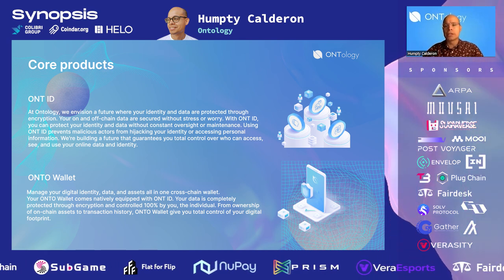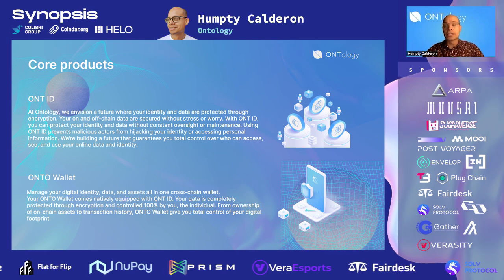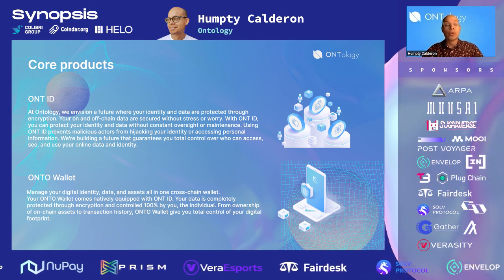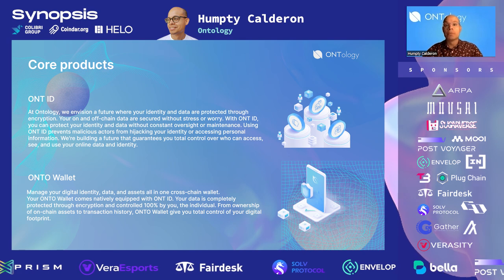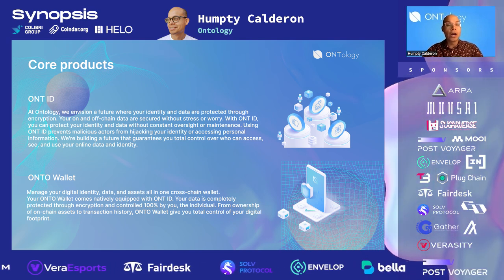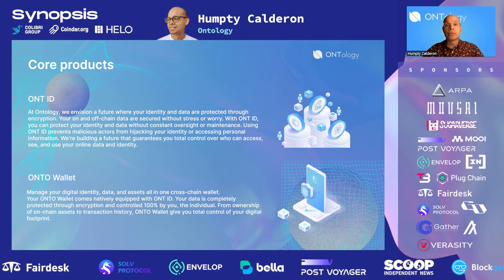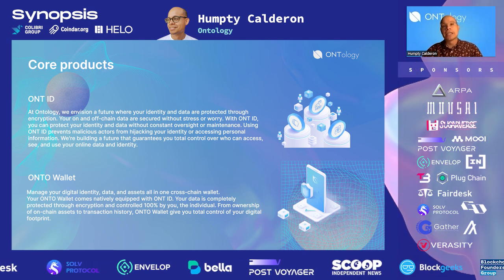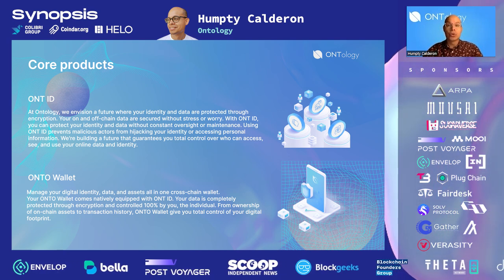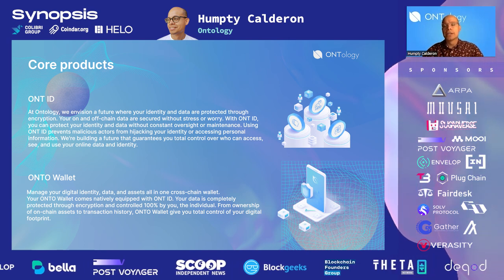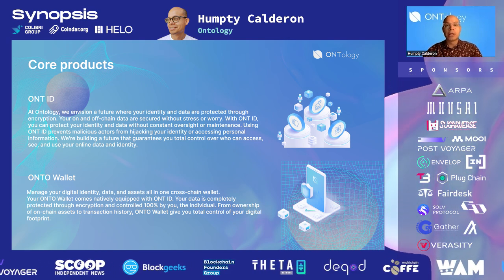OntID is comprised of quite a few different products itself. OntID is the decentralized identifier that Ontology has developed, along with Oscore, which is a protocol that enables you to unlock your reputation and open up under-collateralized markets in DeFi. OntLogin allows you to sign into websites and applications in a way that you remain in control of your identity and data — think of signing in with Facebook or Google, except you control that data and your identity. And the last one is OntTag, which helps applications access user verified credentials in a way that's private and secure.